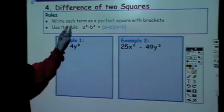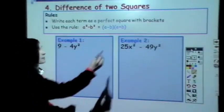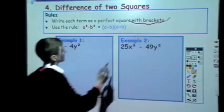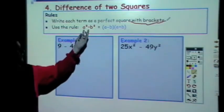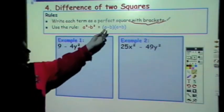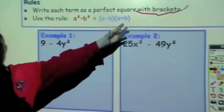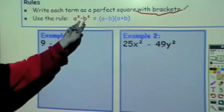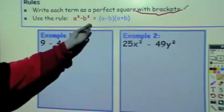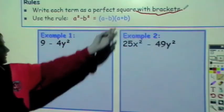And now I will look at the rules. Write each term as a perfect square with brackets. Use the rule a² - b² = (a - b)(a + b). With two terms squared minus in the middle, we can change it into this here.